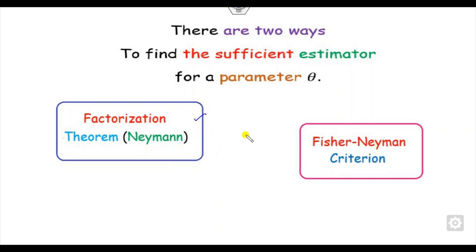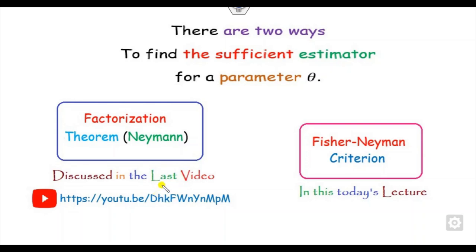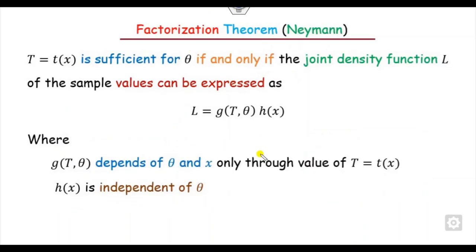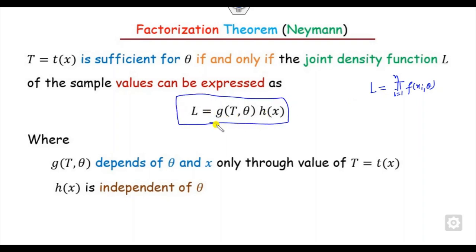The two methods are: the factorization theorem and the Fisher-Newman criteria. In the factorization theorem, which we discussed in the last video, we start with the likelihood function L, simplify it, and try to express it in the form L = g(t, theta) · h(x), where g is a function of both theta and x, and h(x) is independent of theta. If we can write L in this form, then T is the sufficient estimator of theta.